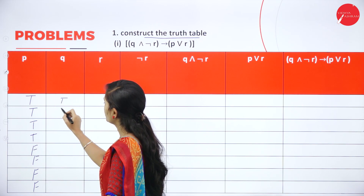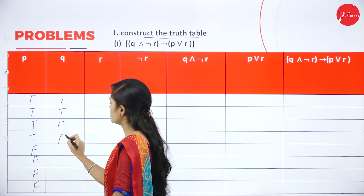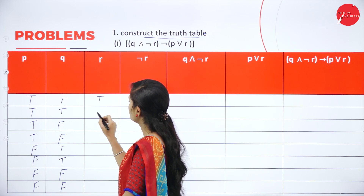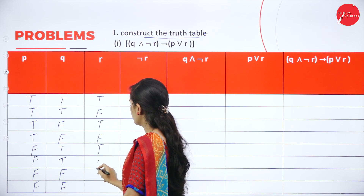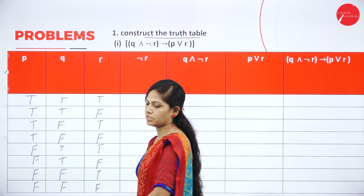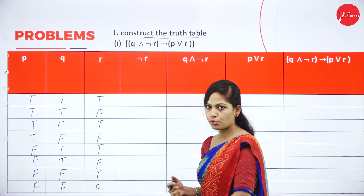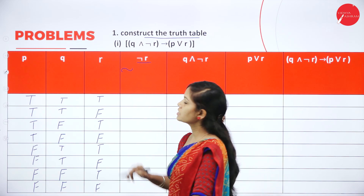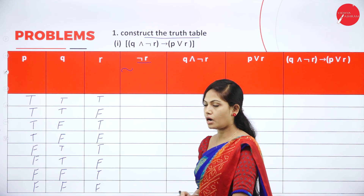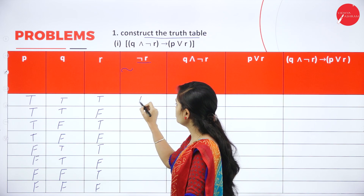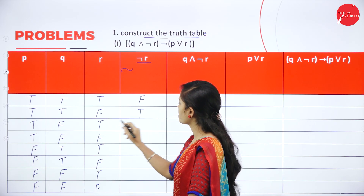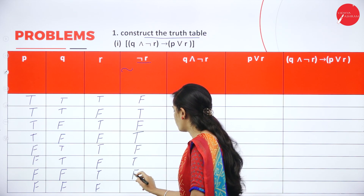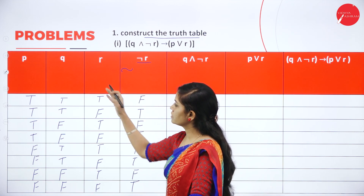For the second column, 2 conditions are true and 2 conditions are false, repeating: true, true, false, false. For the third variable: true, false, true, false. First write all possibilities for P, Q, R, then find negation R. Negation can be written with either symbol. These are the negation values for R.